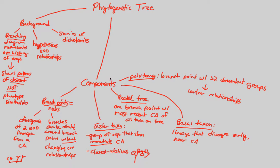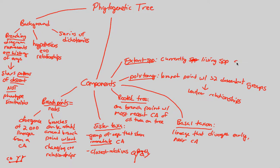Finally, the last component we're going to talk about is the idea of an extant species. I always got confused with this because I misinterpreted 'extant' for 'extinct' — it's the complete opposite. Extant species are those species that are currently living, and they represent themselves at the very tips of the branches. So at those branch tips, you have extant, currently living species. That gives us six major components to remember about phylogenetic trees.